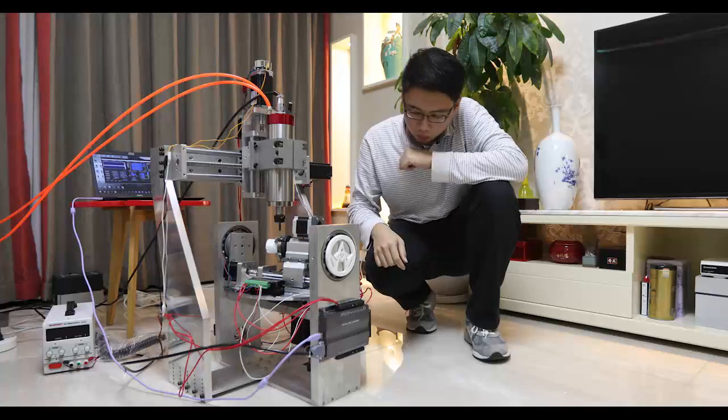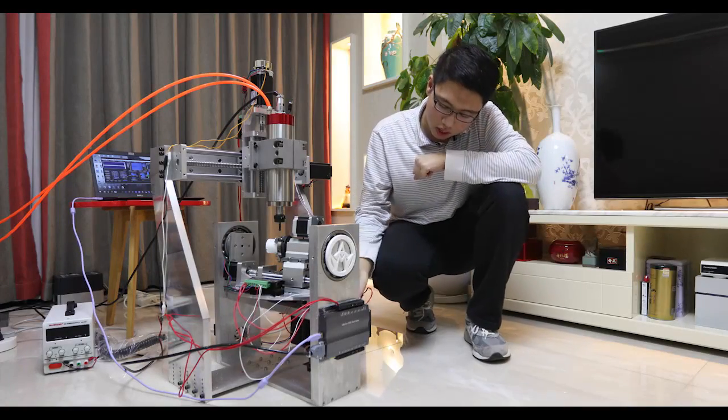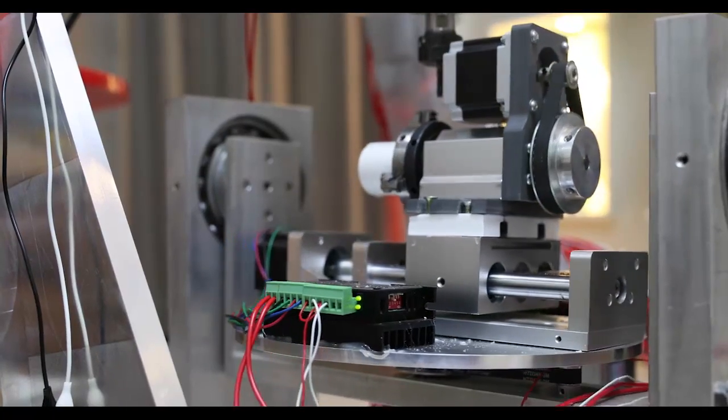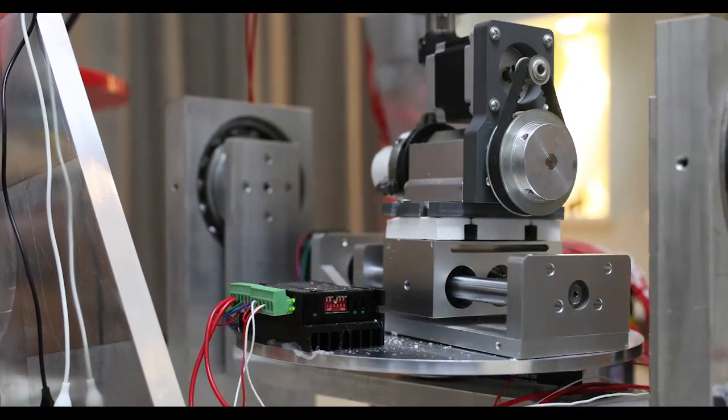And the second one, axis B, is here, down here. And it can make the plate rotate in this direction.